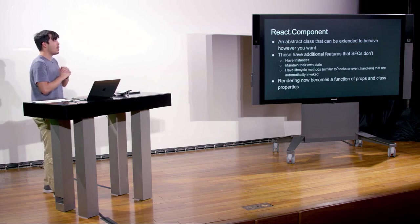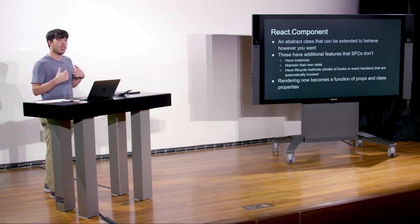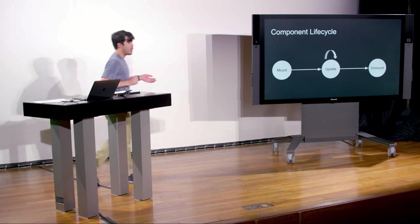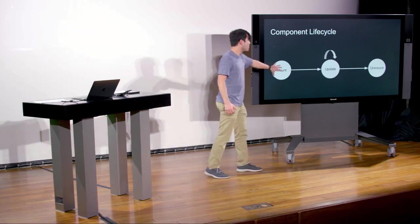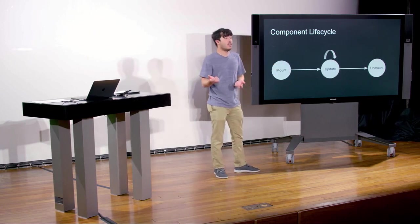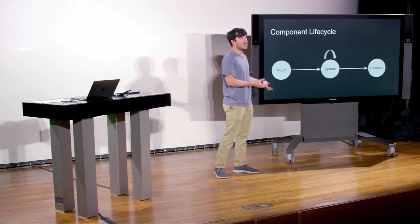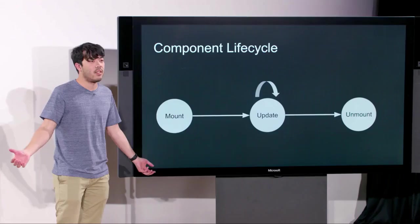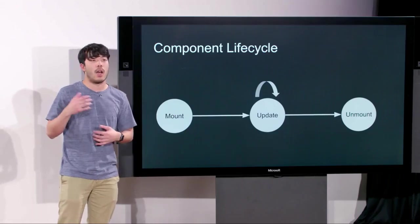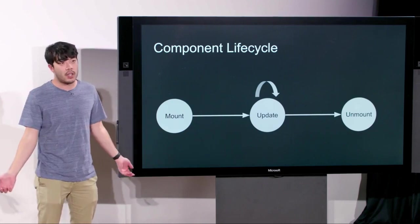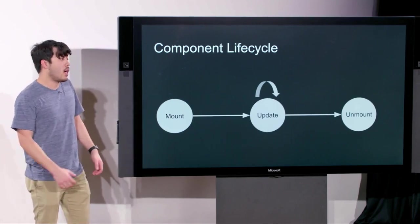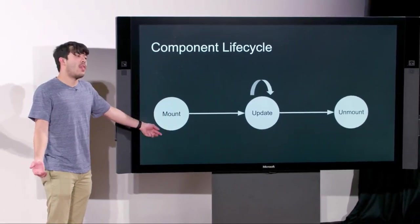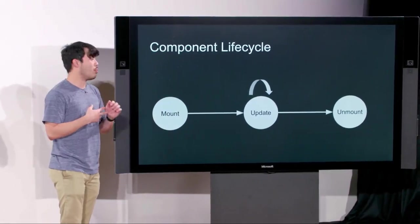What actually is a component lifecycle? A component lifecycle can be represented by a graph. First, a component will mount — that's basically the constructor where the class instance gets created and state gets instantiated. Then it renders, putting UI to the page. Every time we call setState or get new props, we enter what's called an update cycle.